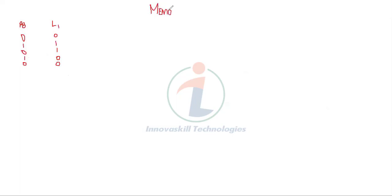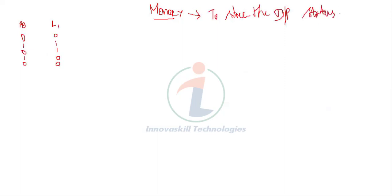When the output is on and off continuously, we have to use a method using memory. The use of memory is just to store the status of the input or output. So we are going to use this memory here to store the status of the input. Our input is a push button, so the push button status I am going to give it to a memory. Then that memory status I am going to give it to L1, that is the output.